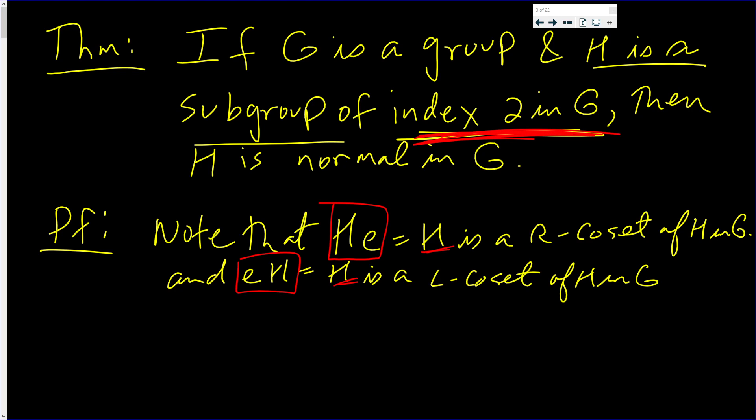Well, there's one more coset in G, one right coset and one left coset. The second right coset of H in G will be G minus H.